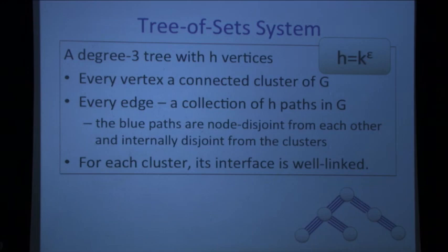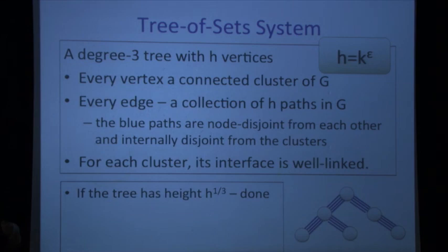We start with this tree and want to turn it into a path. First simple observation: if the height of this tree is at least h^{1/3}, then we just take a root-to-leaf path and that gives us our path-of-set system. We're done.